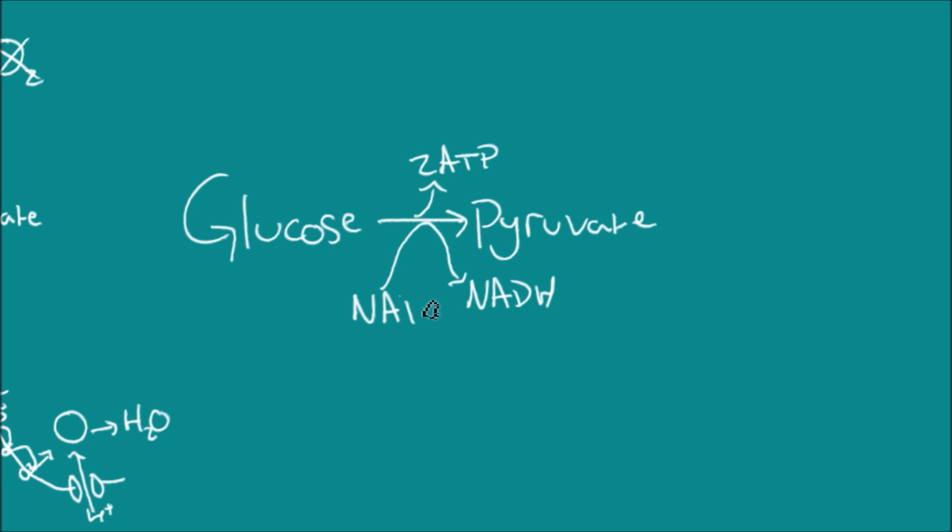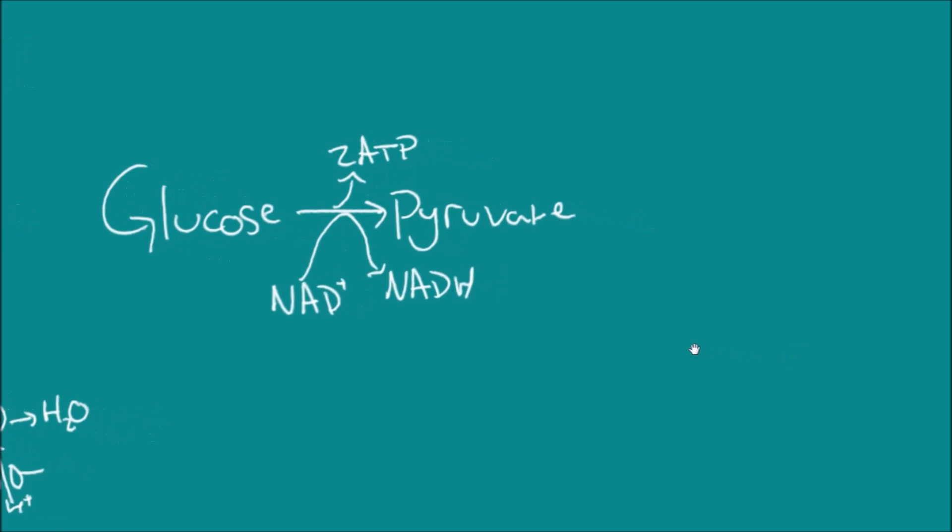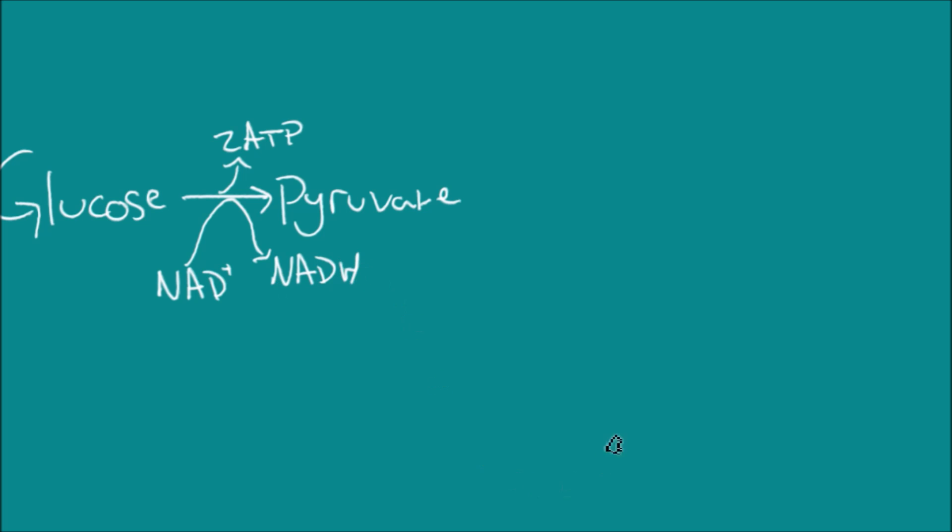Taking into account our problem that we can't just move this NADH on, what we do instead is we reduce the pyruvate by giving back that hydrogen, which reforms our NAD+, and that can go back in a beautifully straight line to the beginning to take part in glycolysis. That NAD+ becomes NADH, and then that NADH gives it back to the pyruvate and it will form lactate, otherwise known as lactic acid.